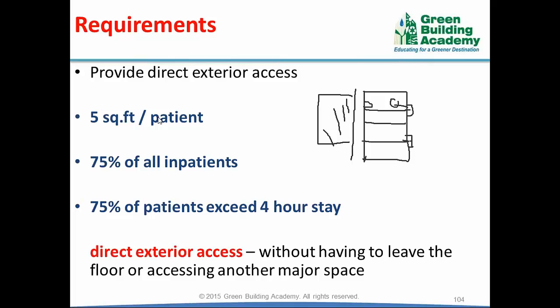The amount of space you have to provide is 5 square feet per patient. The patient count is based on 75% of all in-patients. In-patients are those who are going to stay in the healthcare campus or hospital — for example, those undergoing surgeries or operations. So 75% of such in-patients will be counted, and you must provide 5 square feet per patient of this direct access space.